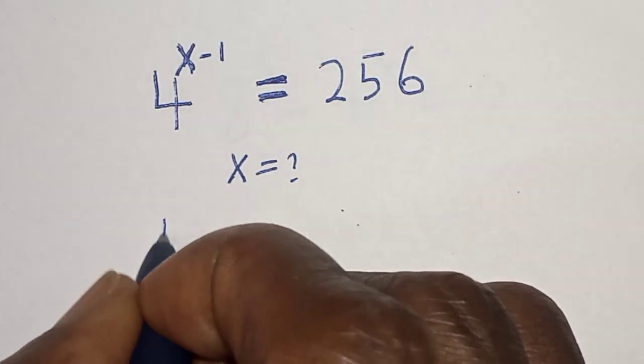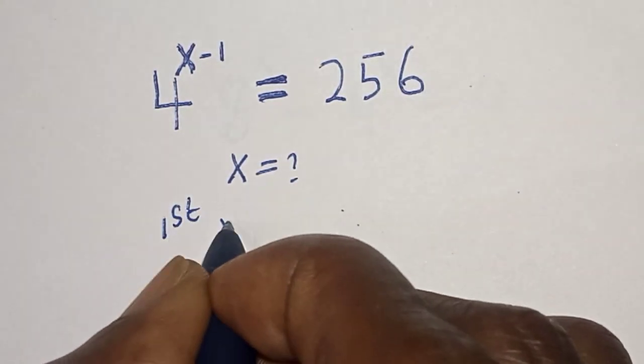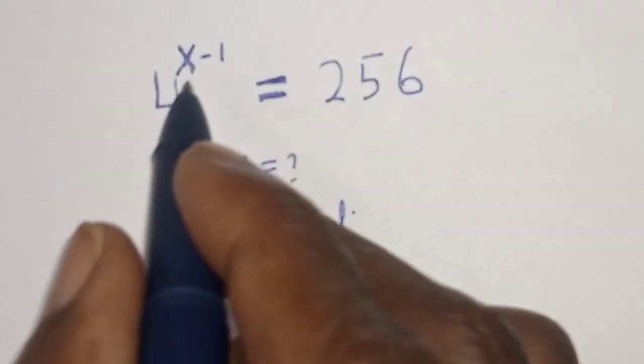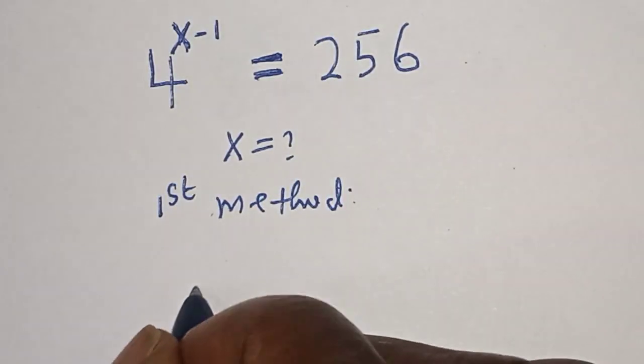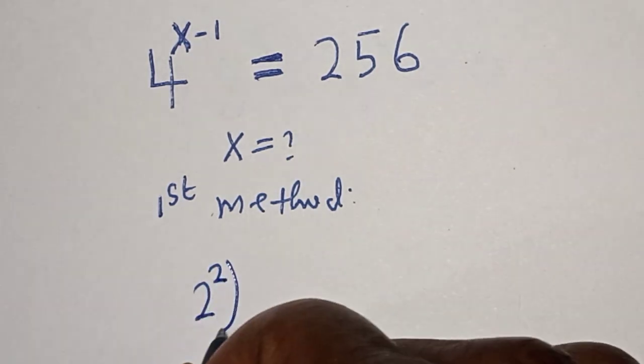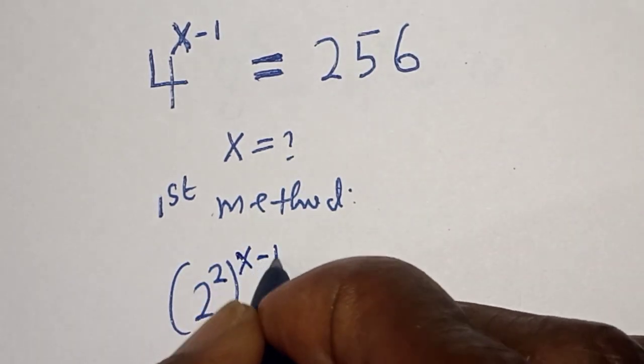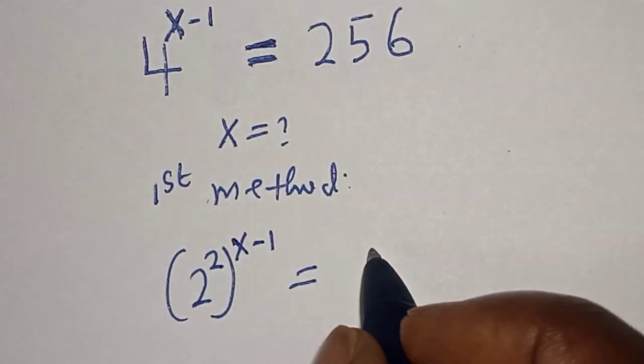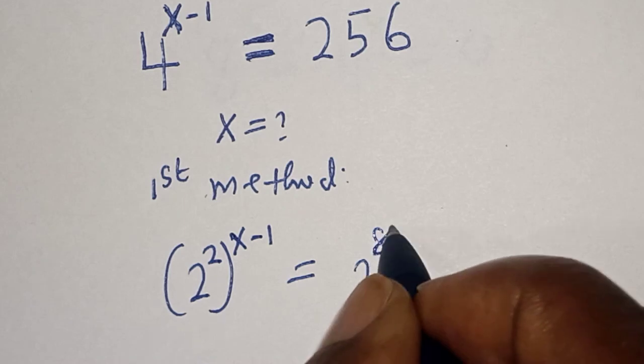Let's consider the first method. 4 raised to power x minus 1 can be written as 2 raised to power 2 to the power of x minus 1, which is equal to 256, which can also be written as 2 raised to power 8.